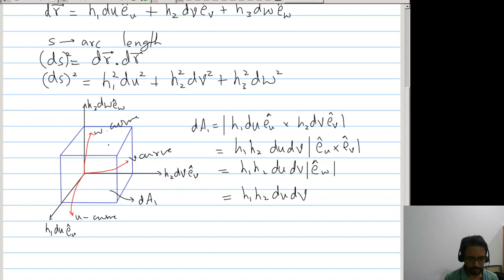Similarly, the other two faces dA2 and dA3: dA2 will be h2 h3 dv dw, and the face dA3 will be equal to h1 h3 du dw.